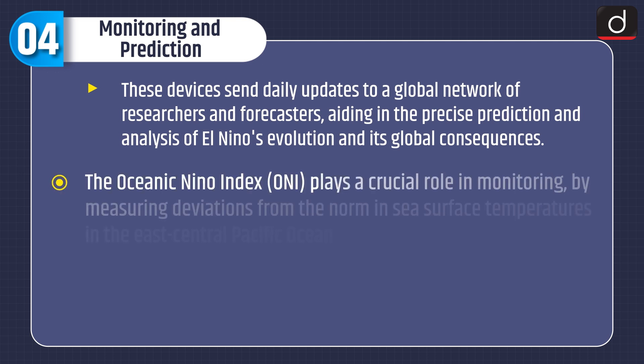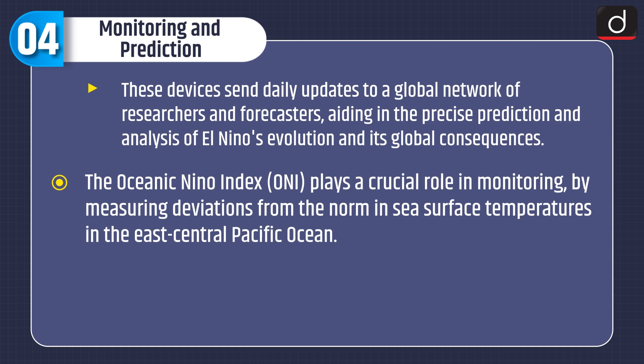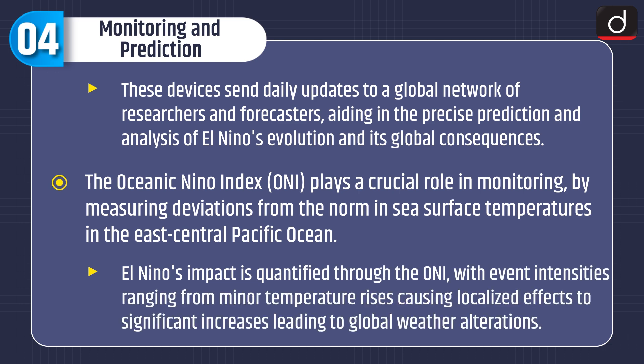The Oceanic Niño Index, or ONI, plays a crucial role in monitoring by measuring deviations from the norm in sea surface temperatures in the east-central Pacific Ocean. El Niño's impact is quantified through the ONI, with event intensities ranging from minor temperature rises causing localized effects to significant increases leading to global weather alterations.